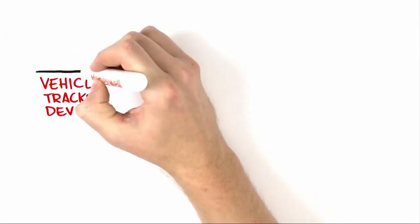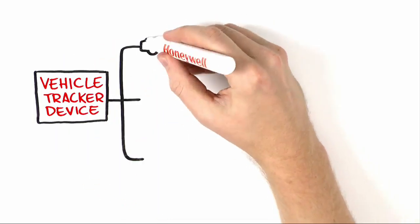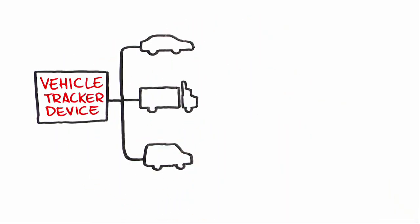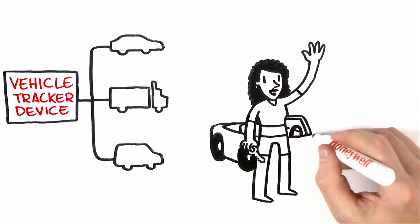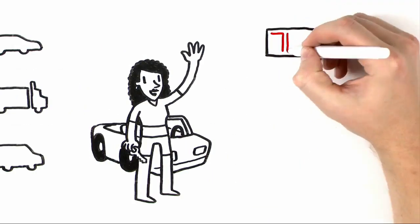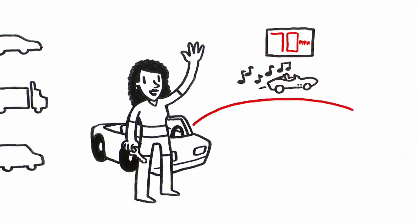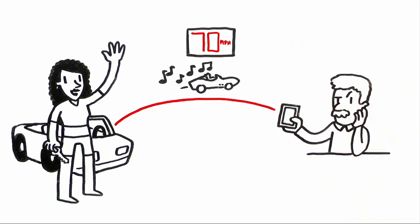Now let's shift to the vehicle tracker. It's great for monitoring cars, trucks, and service vans. So let's say your daughter, a new driver, is taking your car to a friend's house. If she goes over a certain speed limit, you'll get an email or text that also lets you know her location.